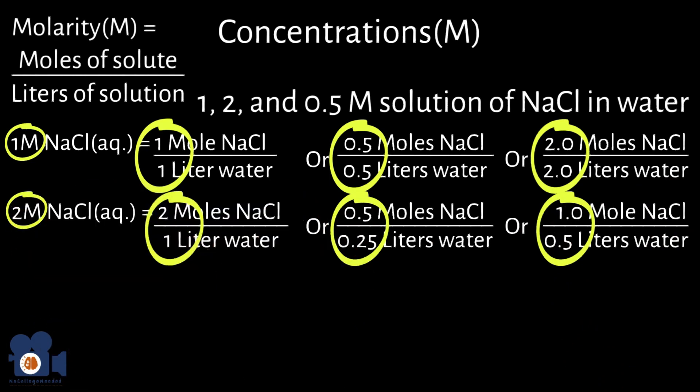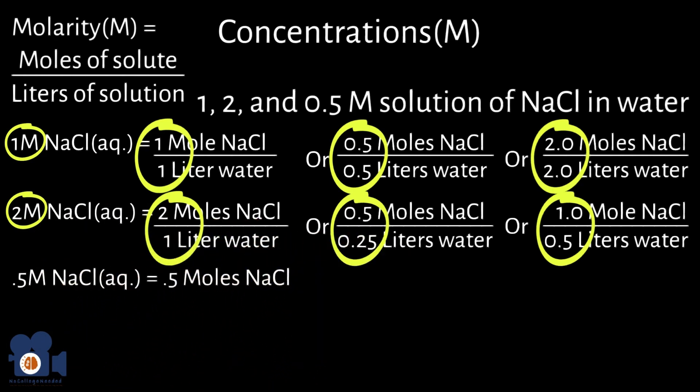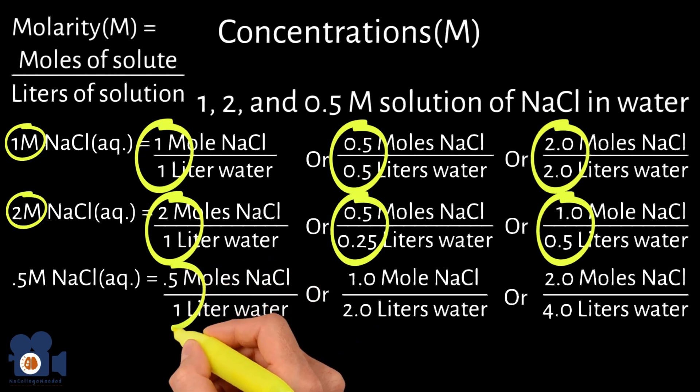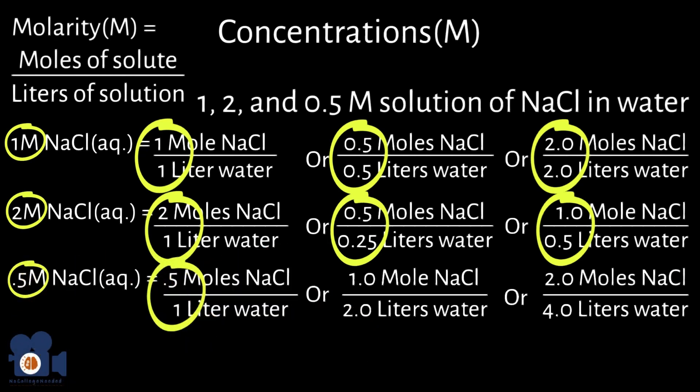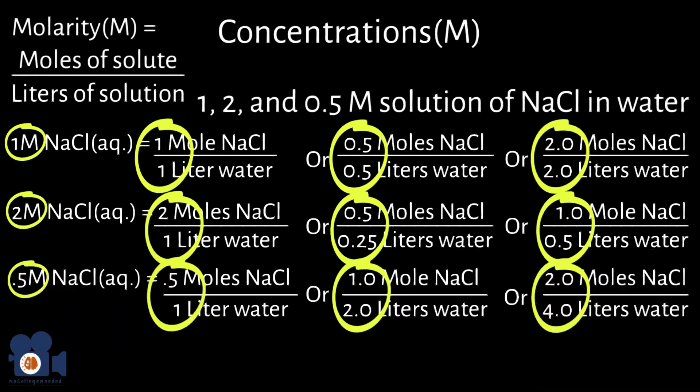Lastly, a 0.5 molar solution of sodium chloride in water would have 0.5 moles of NaCl per one liter of water. This could be either with 0.5 moles of NaCl in one liter of water, one mole of NaCl in two liters of water, or two moles of NaCl in four liters of water. If you look at the math, the division all comes out to be 0.5: 0.5 divided by one equals 0.5, one divided by two equals 0.5, and two divided by four equals 0.5.